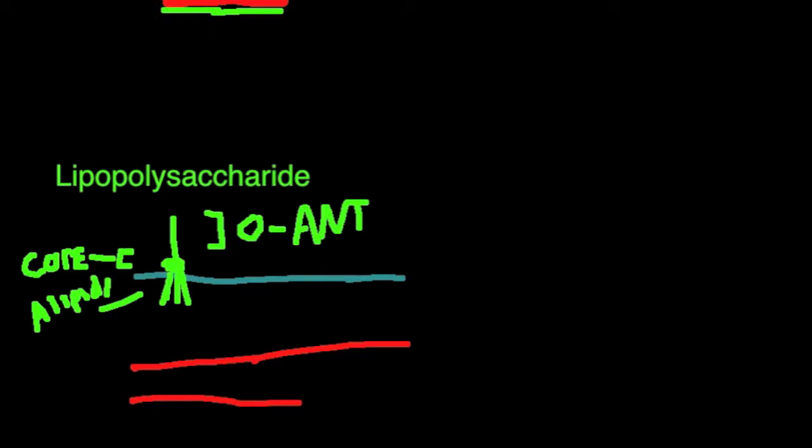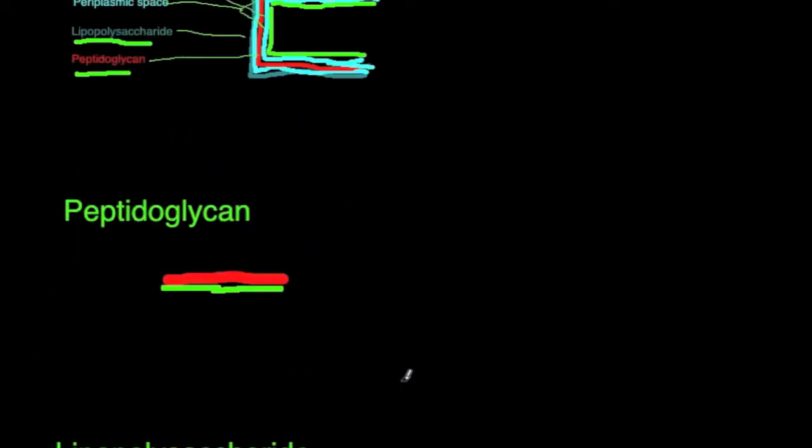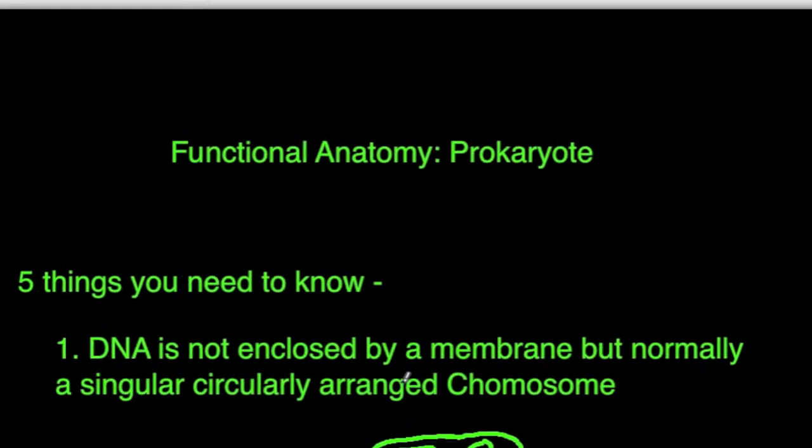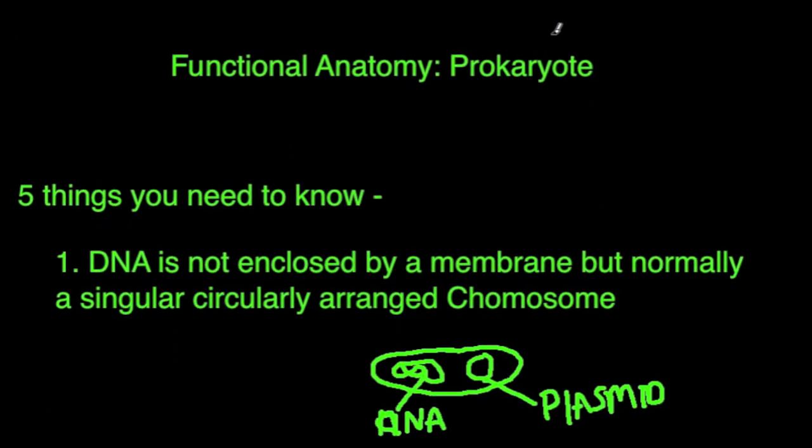So let's draw that in green to help differentiate. Now you have your plasma membrane, sorry, not cell wall. So that's going to be your basics behind your gram-negative, gram-positive, basically your functional anatomy of your prokaryotes.